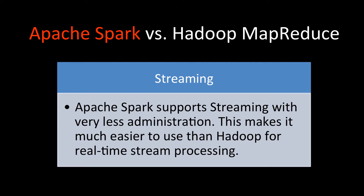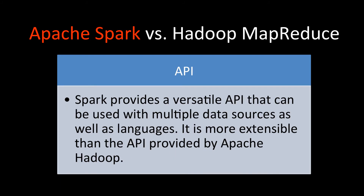Apache Spark introduced support for streaming, where a large amount of data flows with high velocity. Streaming support doesn't require much administration in Spark, making it much easier to use than in Hadoop. In Hadoop, real-time stream processing requires a lot of administration — writing to files and then reading them — whereas Spark supports streaming by default.